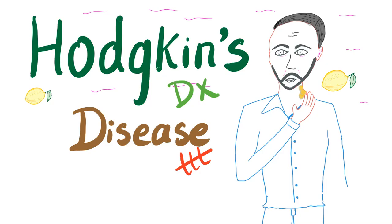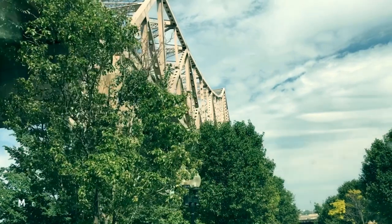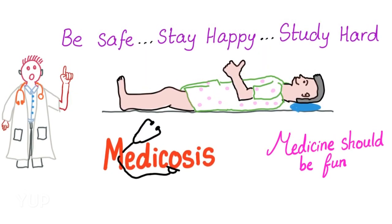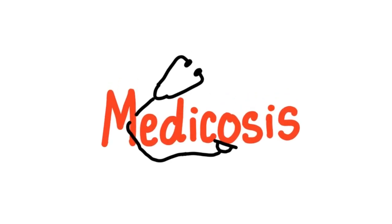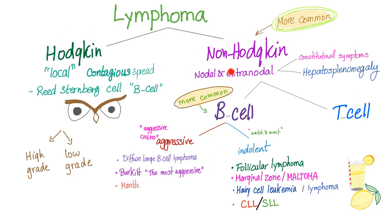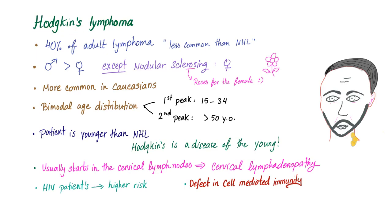After talking about Hodgkin's disease in the previous video, it's time to talk about how to diagnose and treat Hodgkin's disease. Hematological malignancies include leukemias, lymphomas, and myeloma. Lymphomas are either Hodgkin's or non-Hodgkin's. In the previous video we discussed Hodgkin's lymphoma — male more than female, Caucasians, bimodal age distribution, patients are usually younger than those with non-Hodgkin's lymphoma. If you'd like to know more, please watch my previous video.